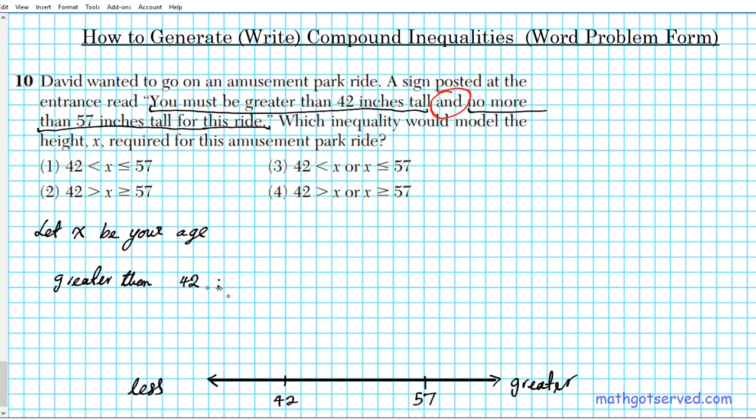So greater than 42, what does that mean? Can it be 42? No, it has to be bigger, any number bigger than 42. So we're going to put an open circle there to show that the value 42 is excluded and we go to the right forever. So any numbers to the right of 42 or greater than 42 will satisfy the first condition.